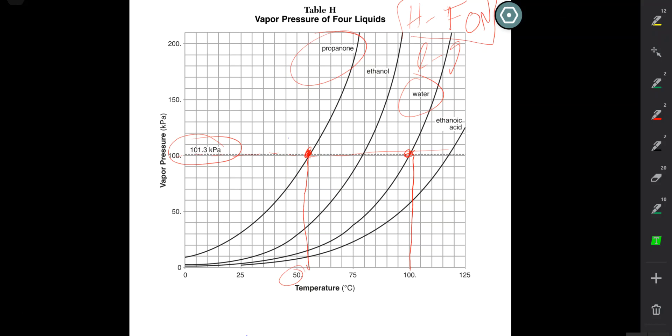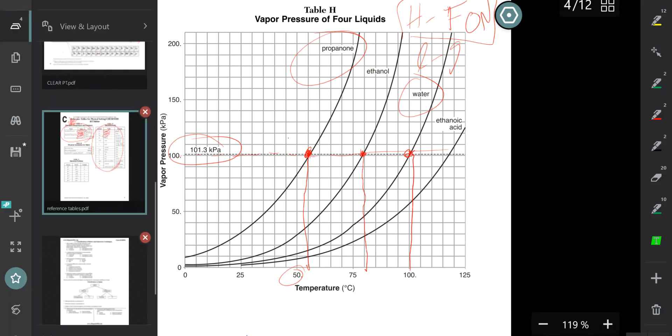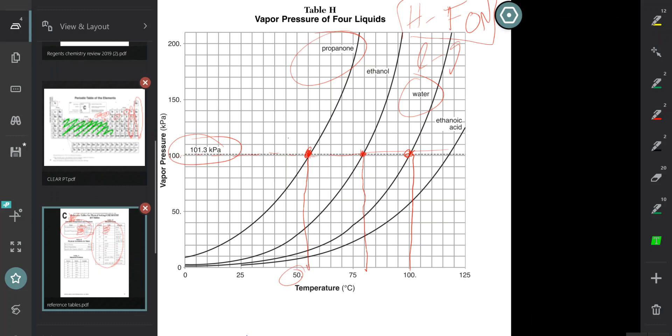Propanone is a much weaker substance. Ethanol is a much weaker substance. Ethanol is actually the alcohol that's present in liquor drinks. It boils at 80 degrees Celsius. So it changes to gas at 80 degrees Celsius. All right. So lower boiling point means weaker intermolecular forces. Higher boiling point means stronger intermolecular forces. So that's really all we need to know about table H.